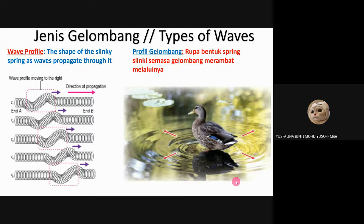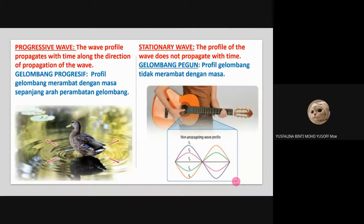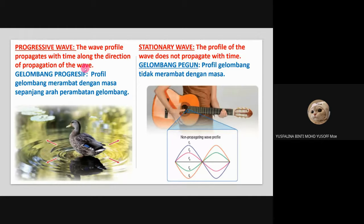The shape of the slinky spring as the wave propagates through it. There are two types of wave. The first one is a progressive wave. The progressive wave is the wave profile that propagates with time along the direction of propagation of the wave. An example is the water wave — if we throw a stone into the water, you can see the water wave move outward from the center of the circle. There is movement of the wave along with time.